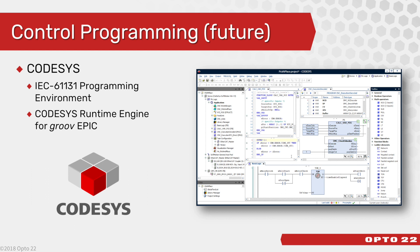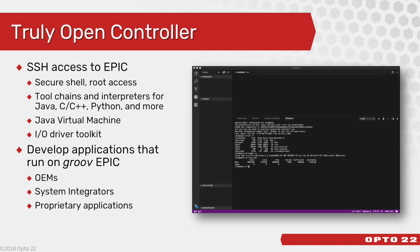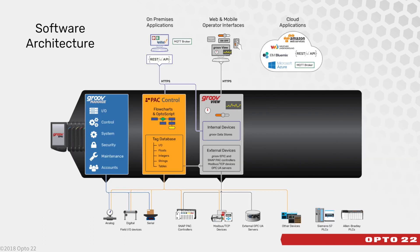There continues to be some demand for programming controllers with an IEC 61131-compatible language, so we've partnered with Codesys to offer their Codesys workbench and runtime engine in GrooveEpic, which will be available very soon. But what's very exciting and what sets GrooveEpic apart from all other controllers on the market is optional Secure Shell Access, or SSH. Imagine an edge-programmable industrial controller with complete secure root access to the operating system and all the peripherals like the I/O, using your favorite programming language like C, C++, Java, Python, and many more. If you're an OEM, system integrator, or have developed your own software, now you have a place to run it.